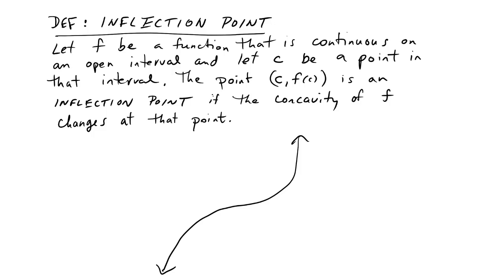We just saw that we could show where a function is concave up and where it's concave down. Now what about places where it just changes from one to the other? Well those are what we're going to call inflection points or points of inflection, you'll hear it both ways.